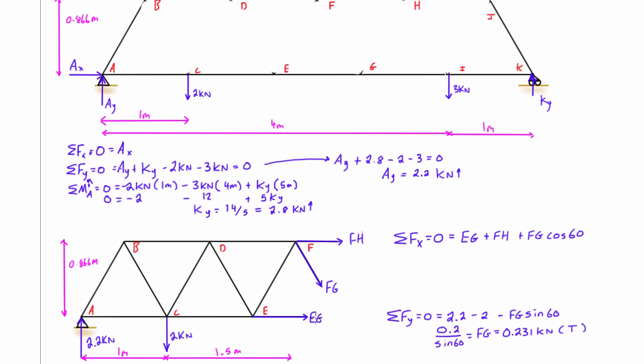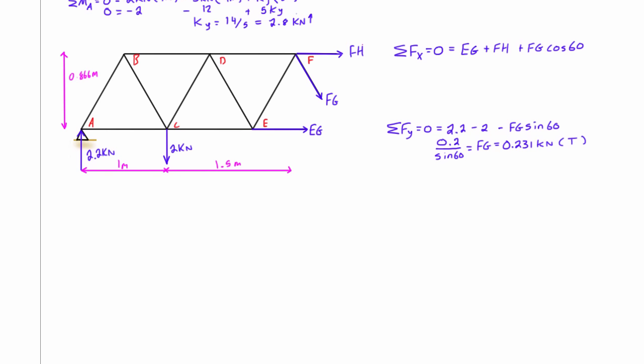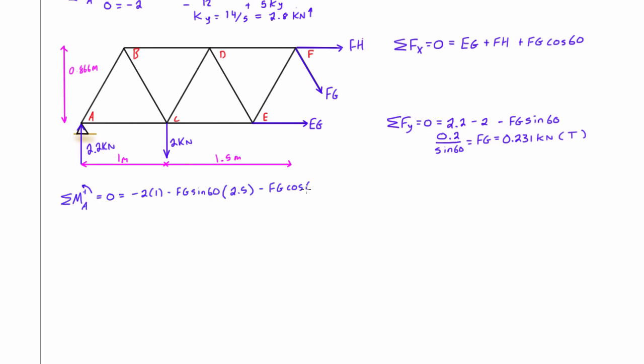Now at this point our unknowns are still Eg and Fh so we're going to have to do one more step by solving for the sum of moments about point A. So you'll see I've written the magnitude of the force times the distance and the distance here is in brackets. So this is this 2 kilonewtons here that's 2 times 1 meter.